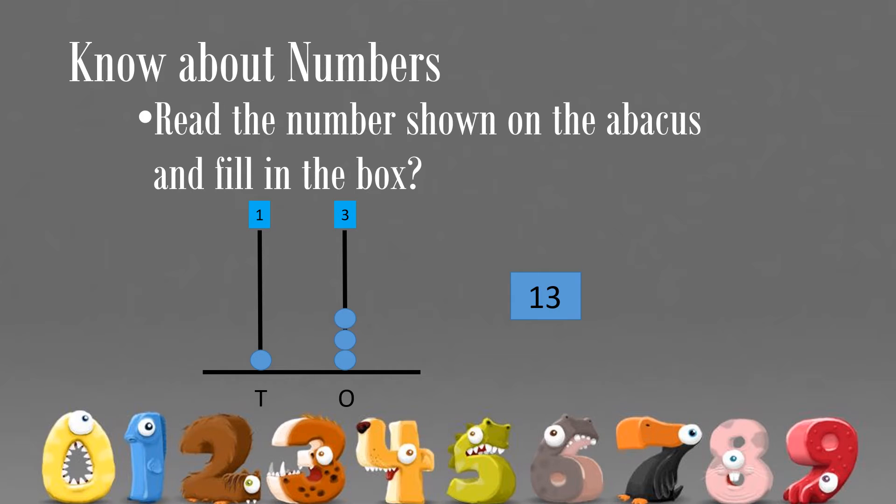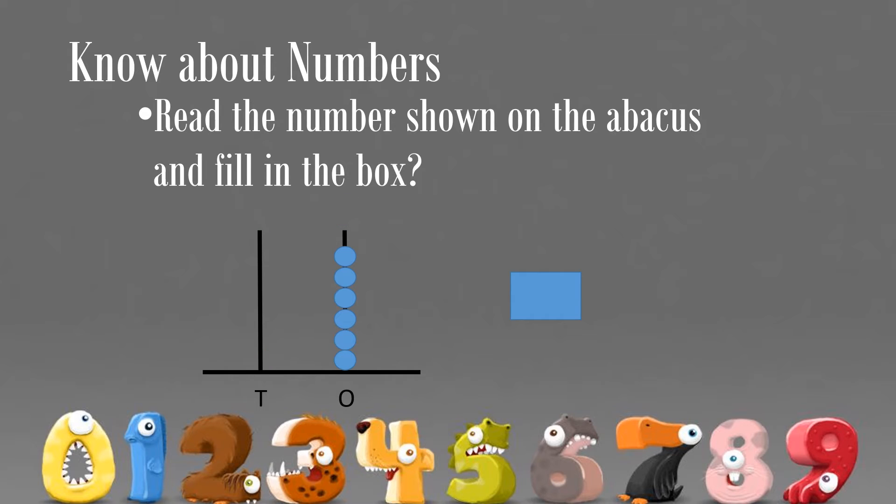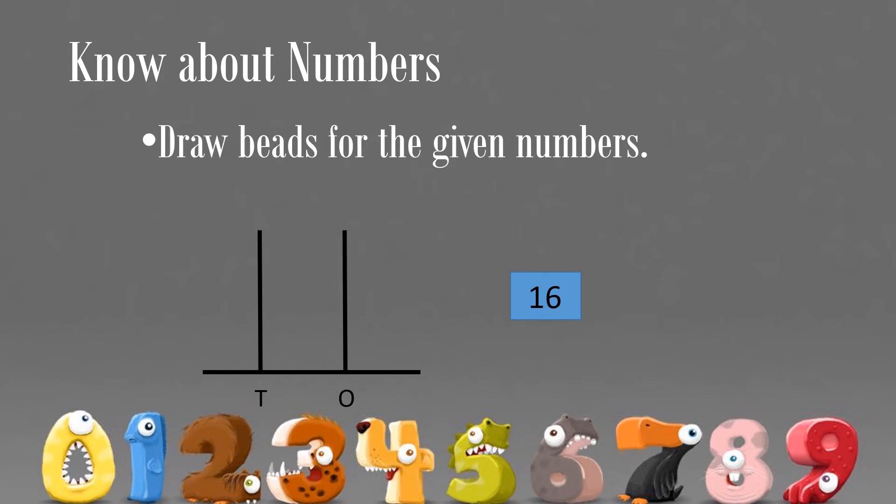The answer is 1 ten and 3 ones makes 13. Read the number shown on the abacus and fill in the box. 0 tens and 6 ones makes number 6.